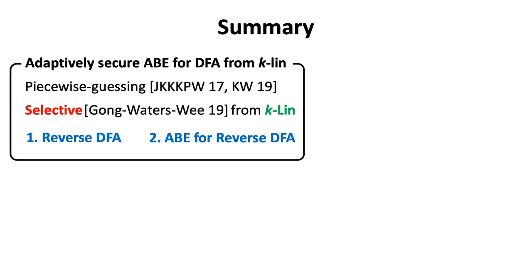In summary, to obtain our ABE for DFA with adaptive security under the k-linear assumption, we combine the recent selectively secure ABE for DFA with a piecewise guessing framework. However, a direct combination leads to an exponential security loss. So we additionally develop the reversed DFA idea and build ABE for the reversed DFA so as to manage the security loss.